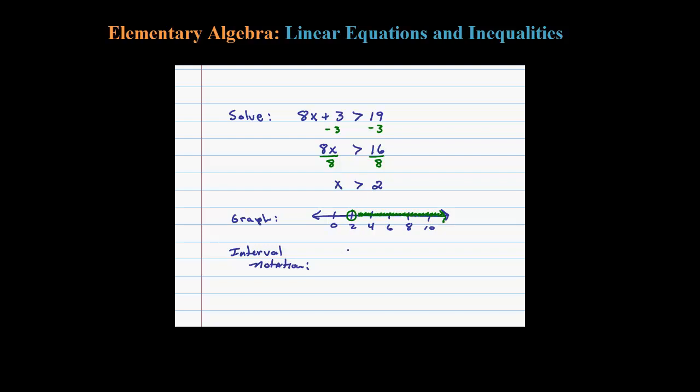All the numbers from 2 out to infinity is the equivalent interval notation for this graph. If that was a closed dot with an equal sign, we would use a square bracket to indicate inclusiveness.